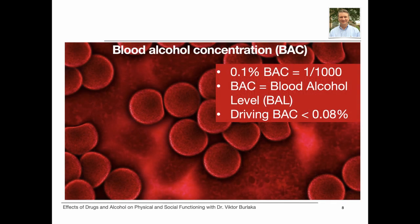Blood alcohol concentration, or BAC, refers to the percent of ethanol circulating in a person's bloodstream, measured in parts alcohol per 1,000 parts of blood. A blood alcohol concentration of 0.10% is one part alcohol per 1,000 parts blood. BAC is sometimes called the blood alcohol level. The current US national guideline used to determine when a person is unable to safely operate a motor vehicle is 0.08% blood alcohol concentration.